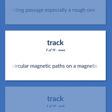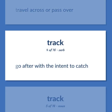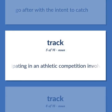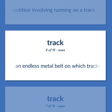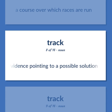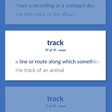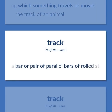Track: Computer science — one of the circular magnetic paths on a magnetic disk that serve as a guide for writing and reading data. Travel across or pass over. Go after with the intent to catch. The act of participating in an athletic competition involving running on a track. An endless metal belt on which tracked vehicles move over the ground. A course over which races are run. Evidence pointing to a possible solution. A distinct selection of music from a recording or compact disc — the title track of the album. A line or route along which something travels or moves — the track of an animal. A bar or pair of parallel bars of rolled steel making the railway along which railroad cars or other vehicles can roll.